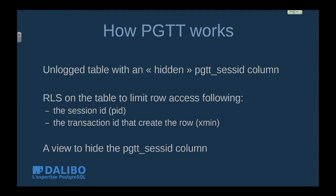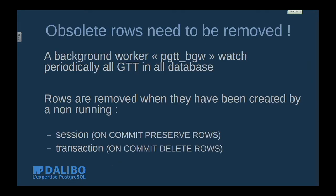Rows are persistent per transaction or per session, and you can create the temporary table in any schema — which is not the case with usual PostgreSQL temporary tables. Row-level security is used to hide other users' rows, making each user see only their own. There is also a view to hide the internal hidden column.